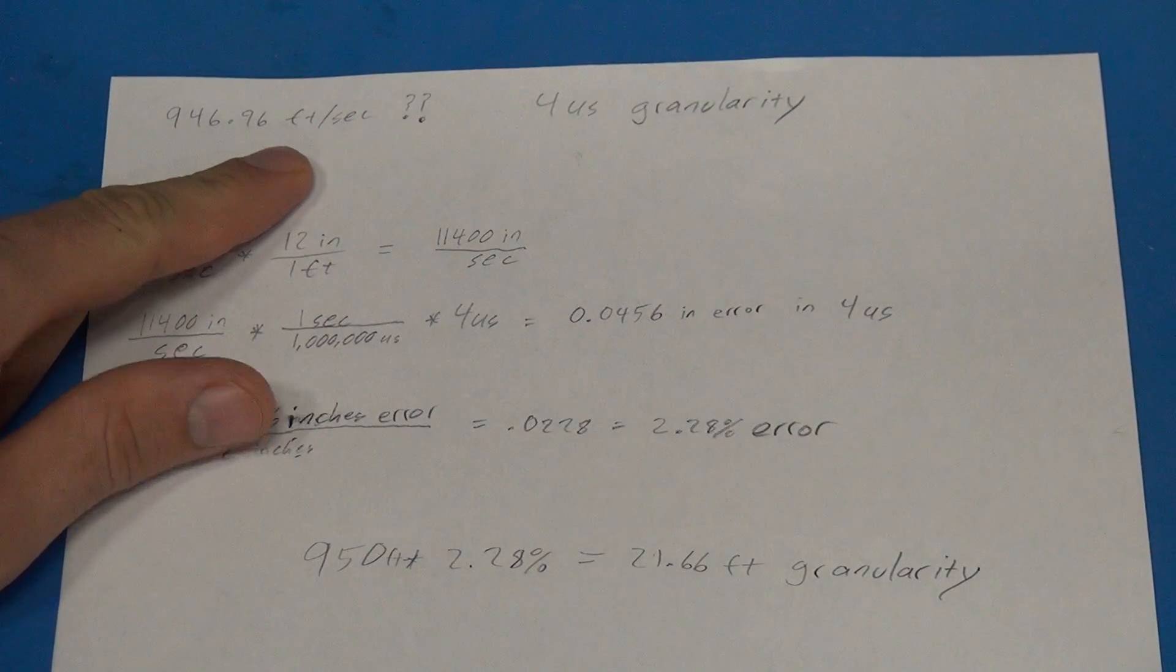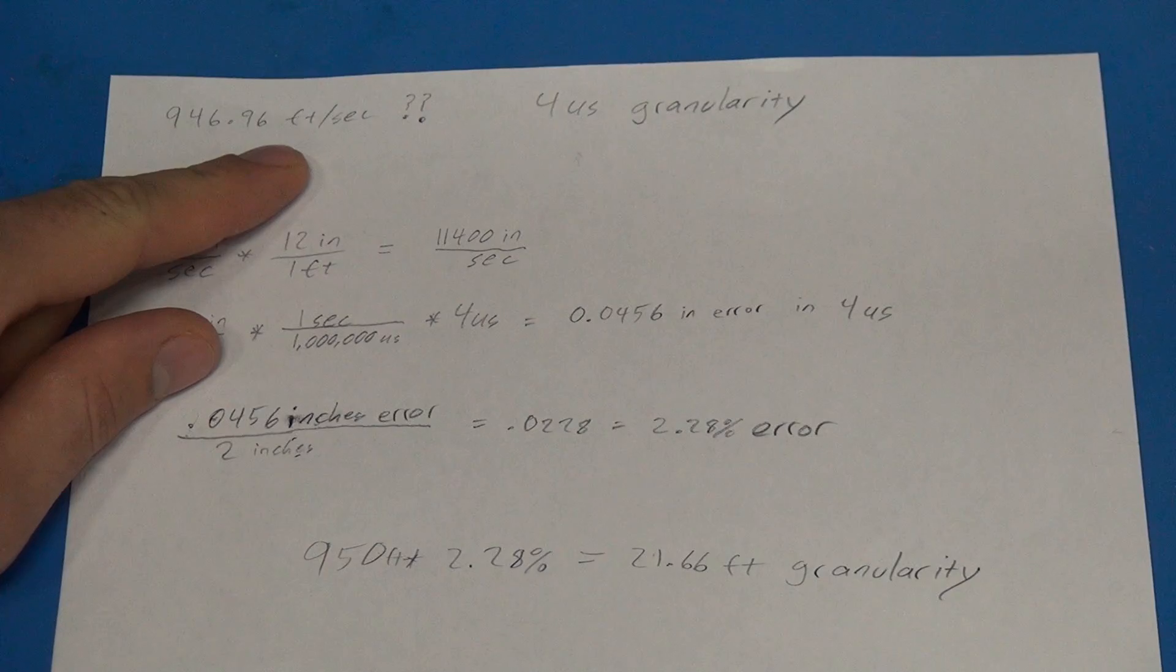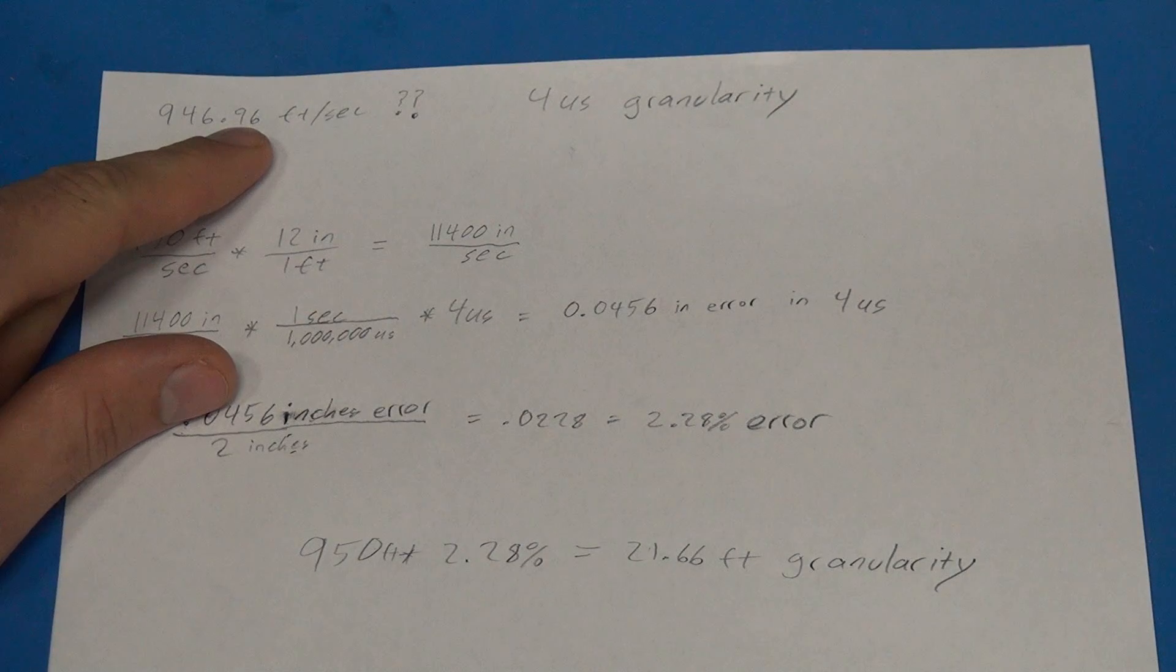But as with any sensor in the real world, there's going to be some error and basically this week I'm going to look into that error, quantify it so that people know how much error to expect with different speeds of projectiles. The thing that really got me looking into this was that nine times out of ten with my pellet gun I would see 946 feet per second and I was like, clearly it's not always that speed. Why am I, what's causing that granularity in the equation?